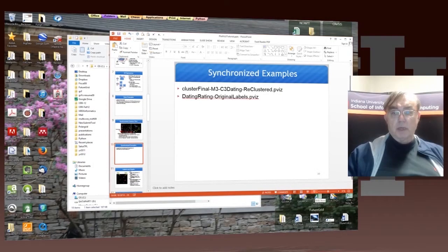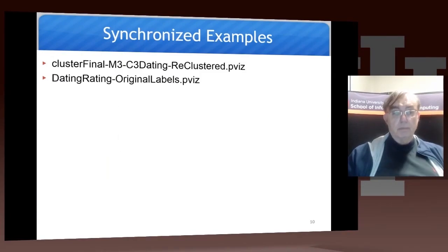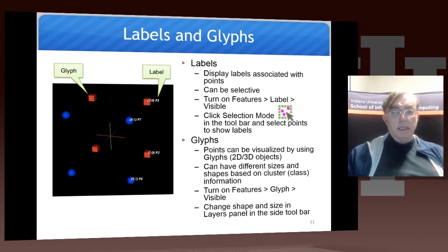Now we come back to PowerPoint. The next one discusses things we've actually briefly looked at already: glyphs and labels. The labels are on the cube one, and you can either set the labels by clicking on the point, or you can set it by using the selection mode by drawing a window, and then you'll find the label for the points in the windows.